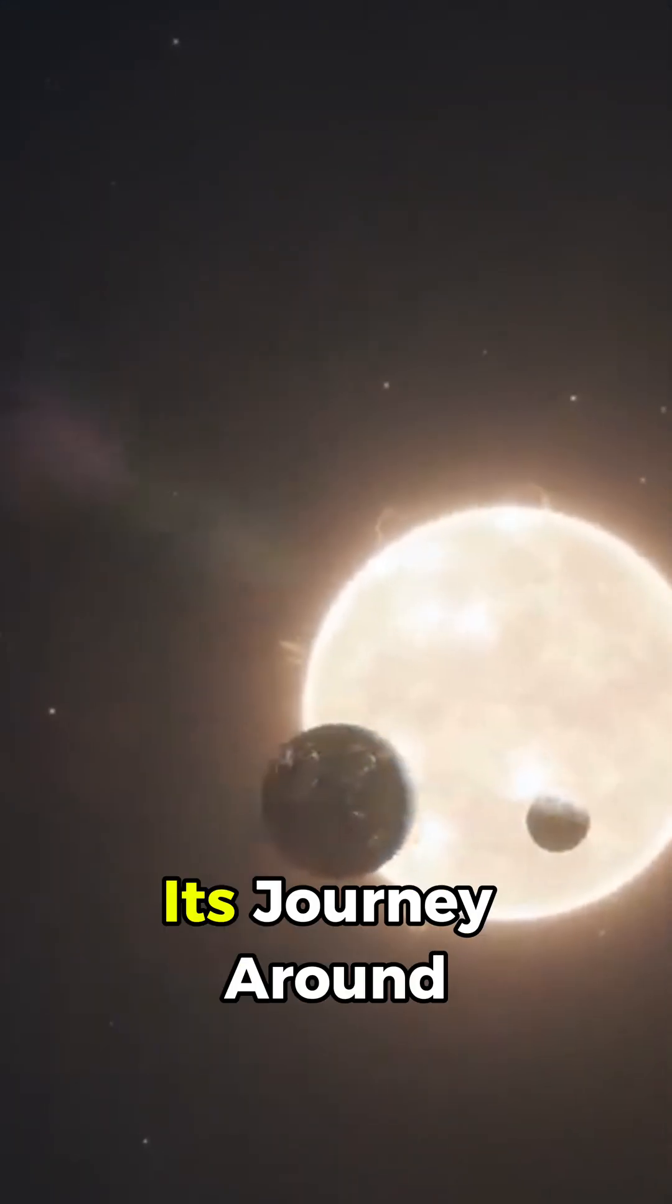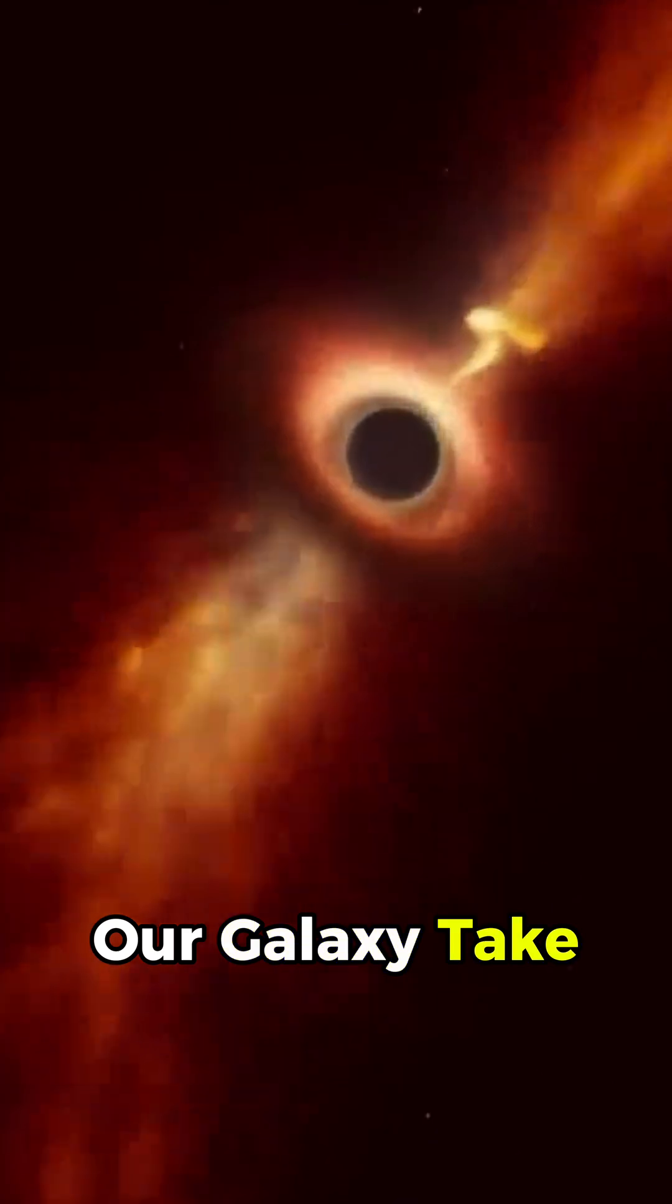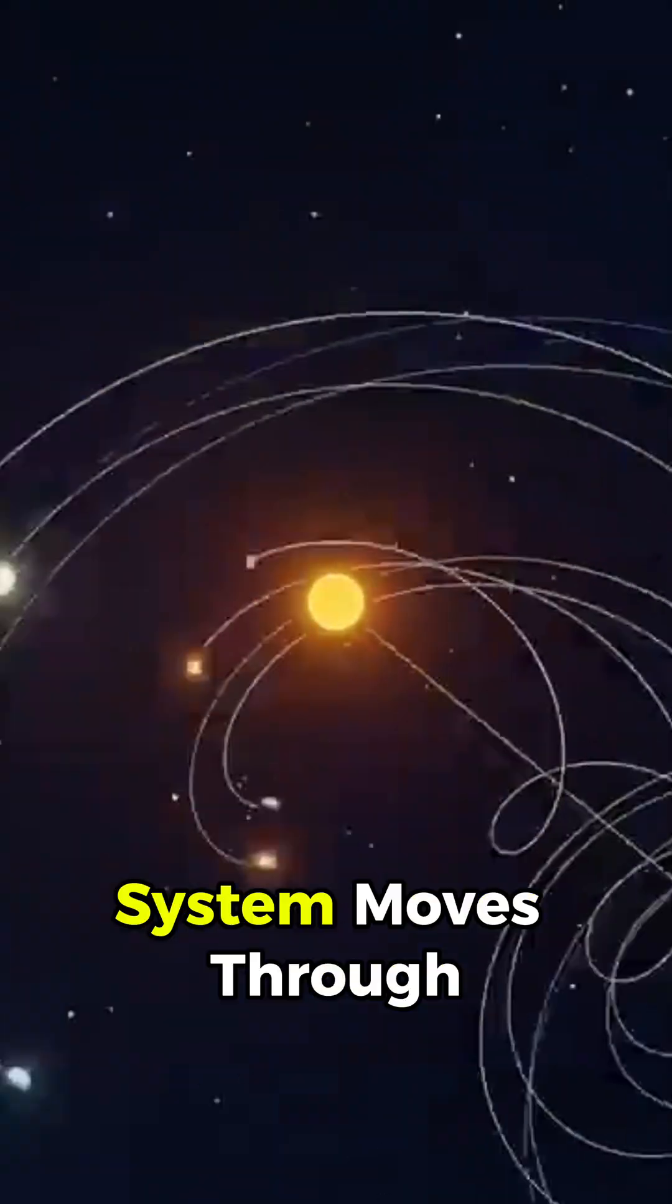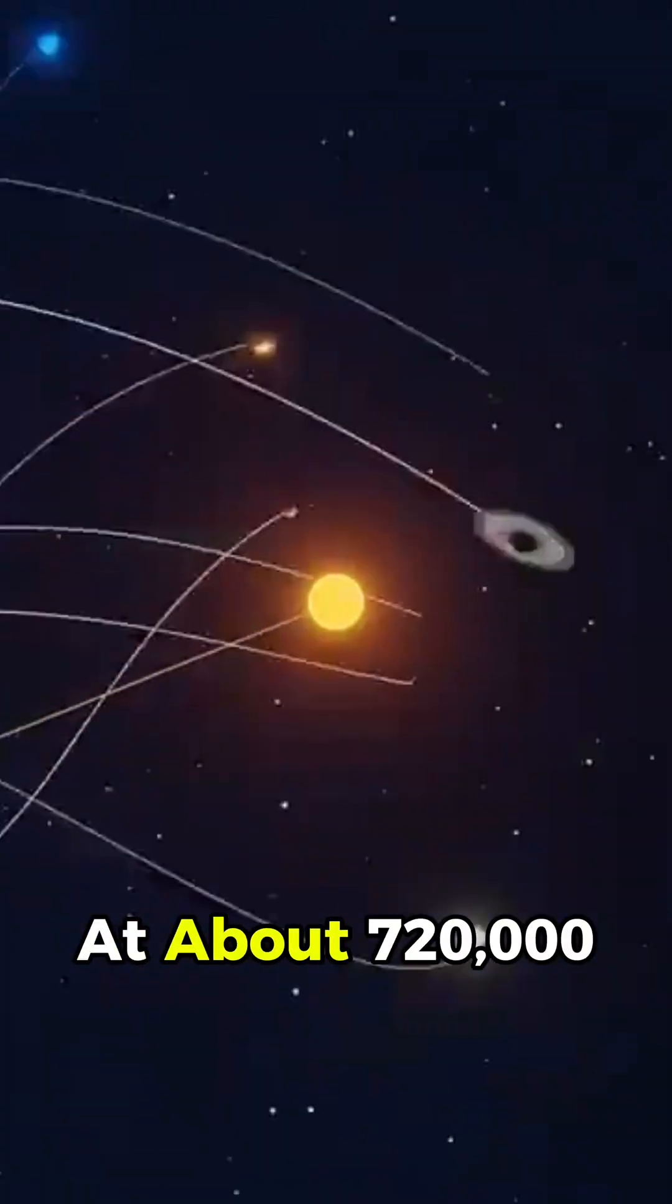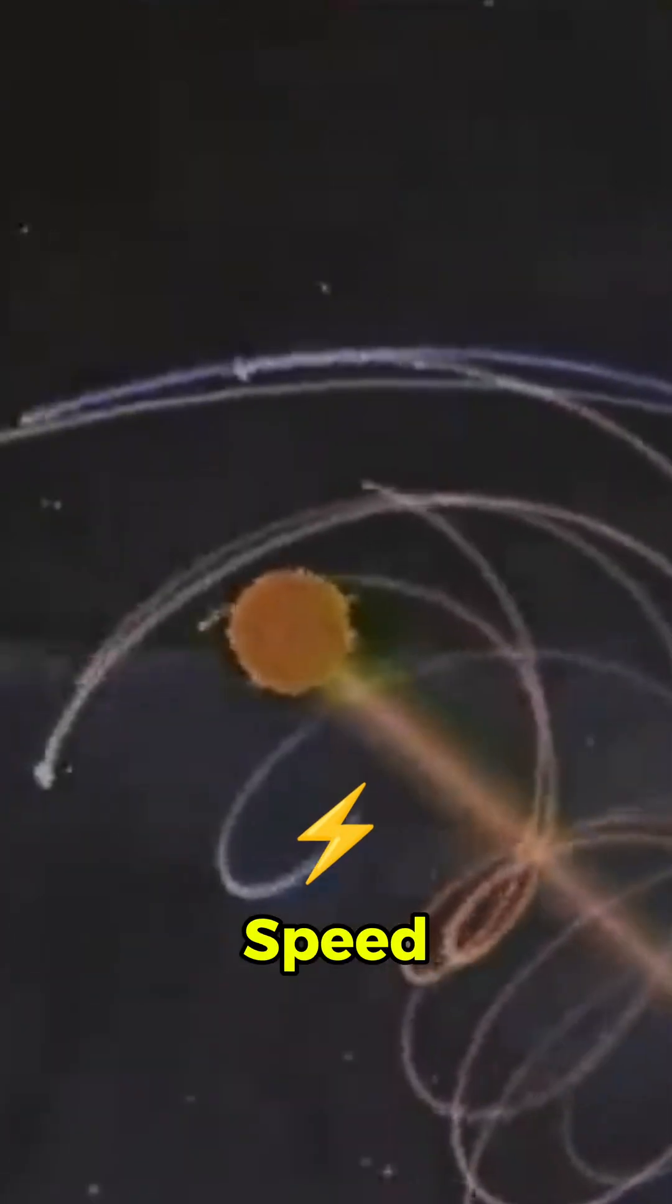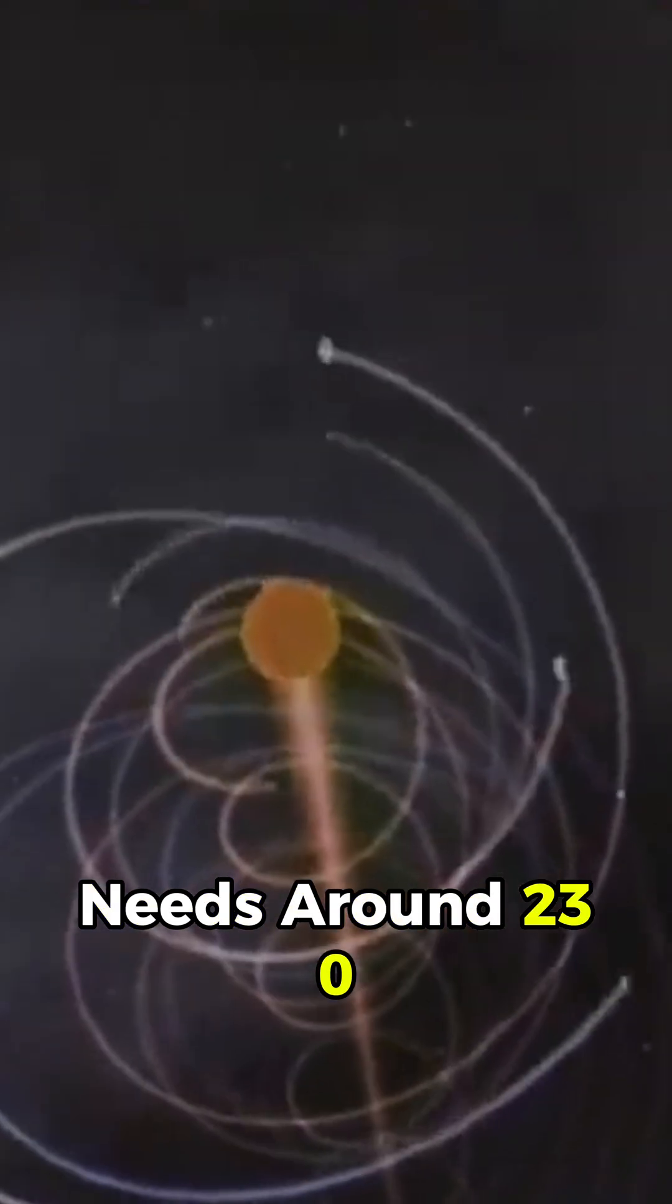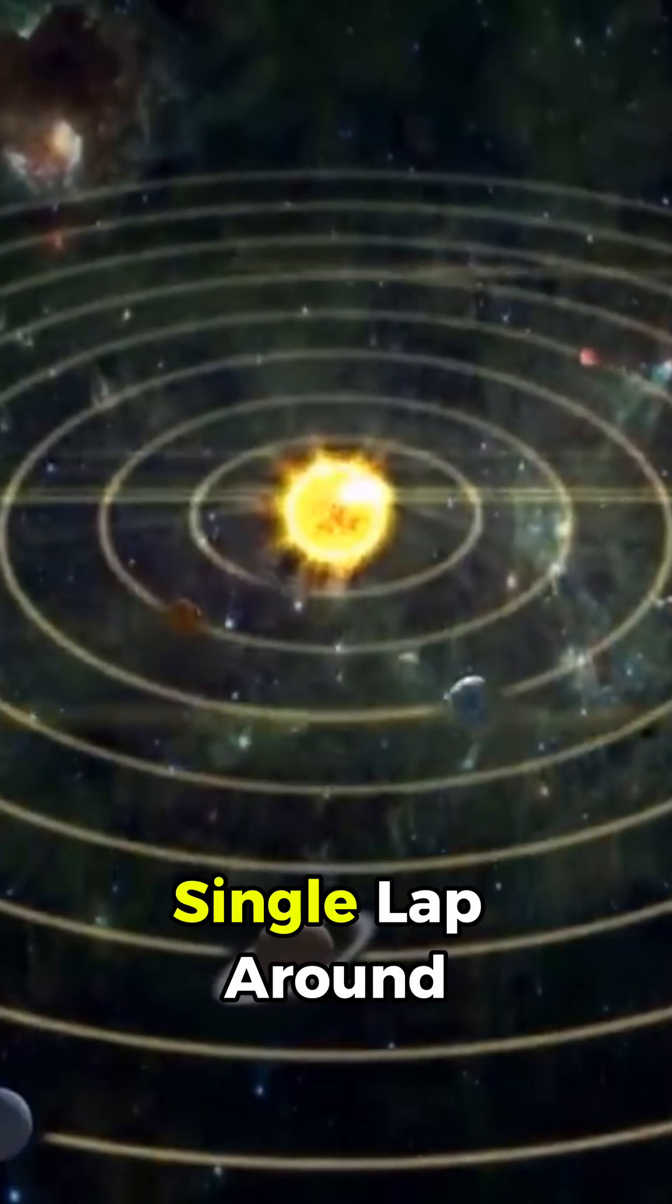How long does its journey around the giant black hole in the center of our galaxy take? Our whole solar system moves through the Milky Way at about 720,000 kilometers per hour. Even at that unbelievable speed, the sun still needs around 230 million years to finish a single lap around the galaxy.